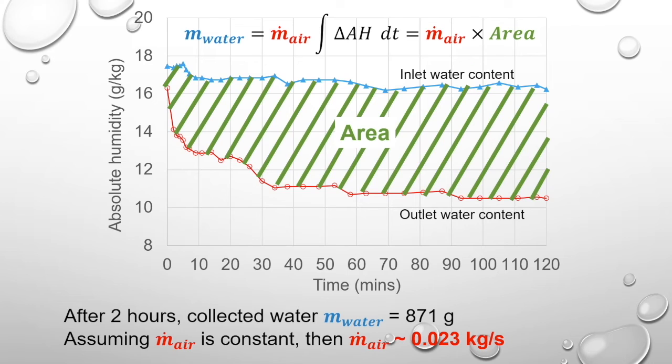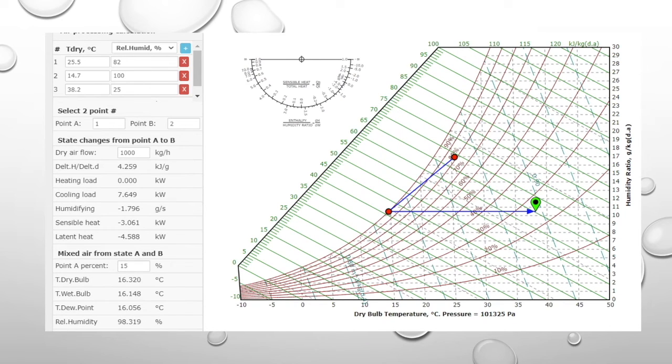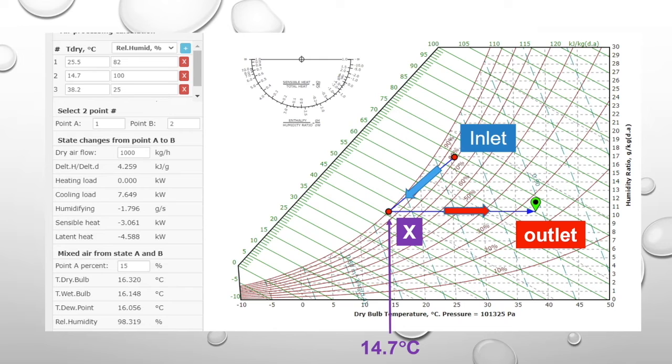The cooling capacity can now be estimated assuming that the dehumidifier first cools the air from the inlet to the dew point of the outlet, which is the state x here, then heats it to the outlet temperature. Here, state x has a temperature of 14.7 degrees Celsius. The cooling capacity is the air flow rate multiplied by the enthalpy difference between the inlet and state x.